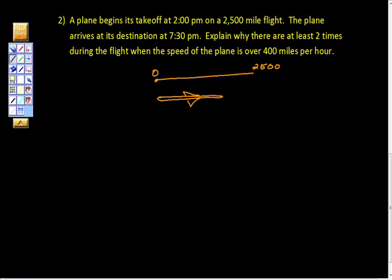The plane takes off at 2 p.m. and lands at 7:30 p.m. In calculus, 2 o'clock to me is time equals zero—that's when the plane starts to take off. The time period between 2 p.m. and 7:30 p.m. is five and a half hours.